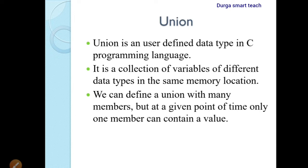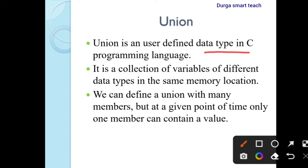I already discussed structure. Structure is a user-defined data type in C programming language. Like structure, union is also a user-defined data type in C programming language. Structure is used to store and declare different types of data. Union also is used to declare different types of data.